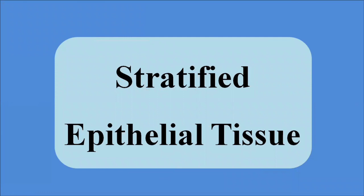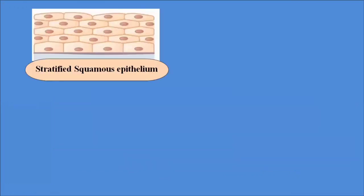The other main type of epithelial tissue is stratified epithelium, made up of multiple layers of cells. Stratified epithelium is also classified on the basis of shape into squamous, cuboidal, columnar, and transitional types. Stratified squamous epithelium has multiple layers of squamous-shaped cells and provides the lining to the esophagus and mouth, offering protection to these organs.